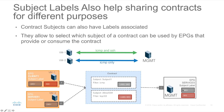The management EPG will use both labels to select relationships with EPGs that use this contract with both. Whereas EPG client one is using both labels and therefore has access to both filters, the EPG server one is only using the gray label. This means that the contract relationship only allows use of the filter for ICMP.